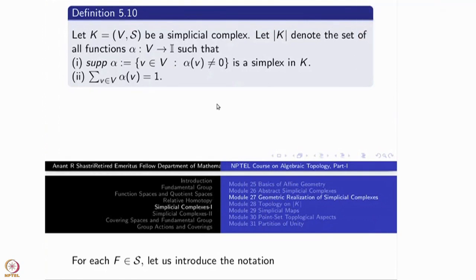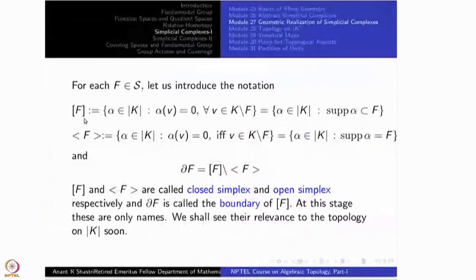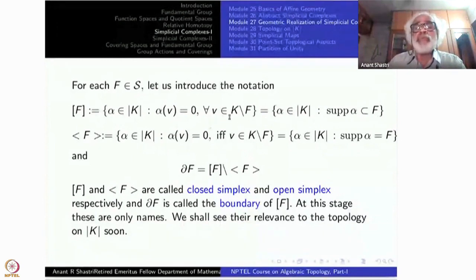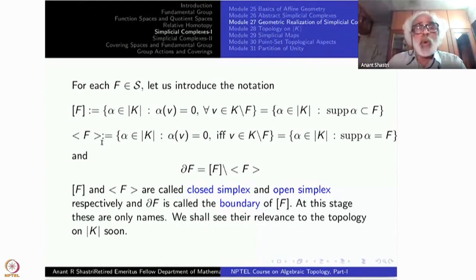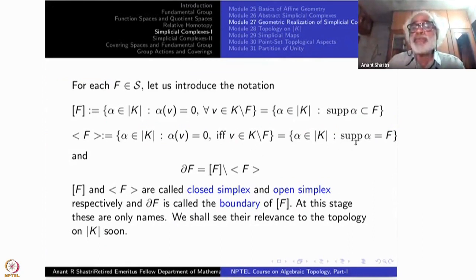After that we introduced two notations. For each simplex, the closed simplex [f] is all v for which the support is contained inside f — the same as: for every v inside k minus f, it is 0. The second one, the open simplex, is all alpha in k such that alpha(v) is 0 if and only if v is in k minus f. That means if v is in f, it is not 0 — which is the same as saying the support of alpha equals f.